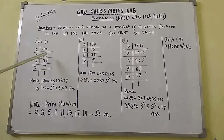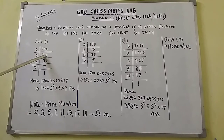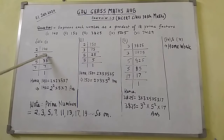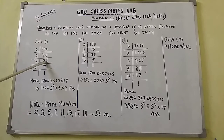So divide 140 by 2; the result is 70. So 2 × 70 = 140. Then 70 also has 0 at the unit place, so it can again be divided by 2. The result is 35, and 35 × 2 = 70.